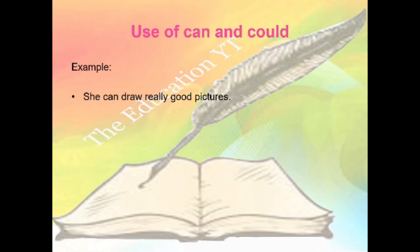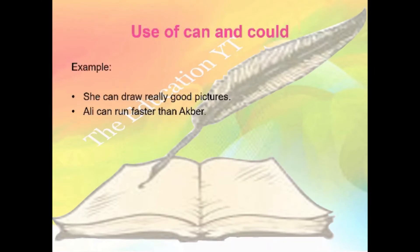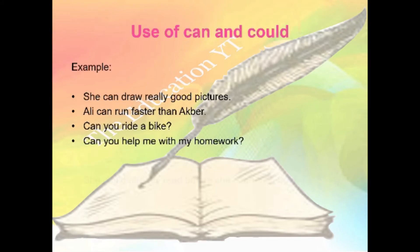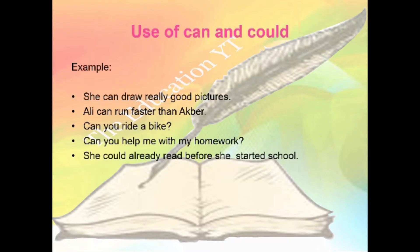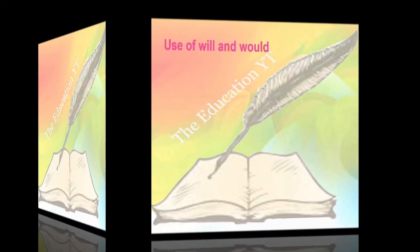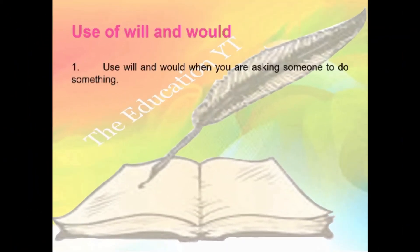Examples of can and could: She can draw really good pictures. Ali can run faster than Akbar. Can you ride a bike? Can you help me with my homework? She could already read before she started school.